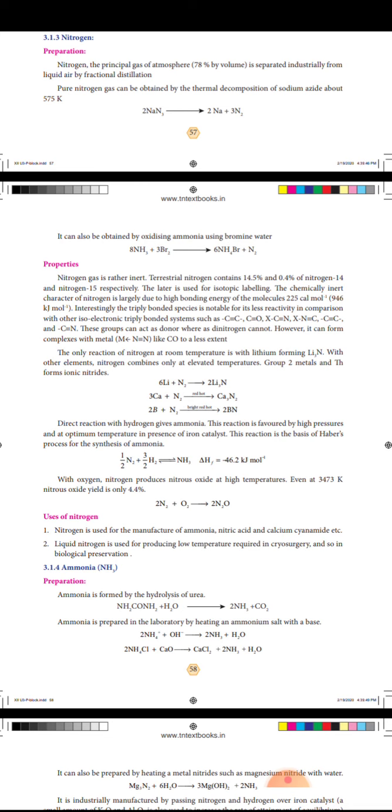Properties: Nitrogen gas is rather inert. Terrestrial nitrogen contains 14.5% and 0.4% Nitrogen-14 isotope.